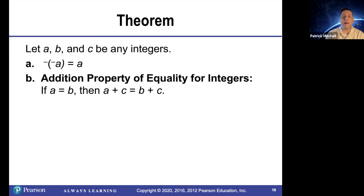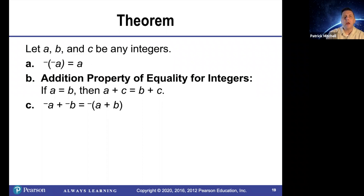The addition property of equality for integers — this is how we solve a lot of equations in algebra. If a equals b, then a plus c is equal to b plus c. You're allowed to add the number c to both sides of an equation. The opposite of a plus the opposite of b is equal to the opposite of a plus b.